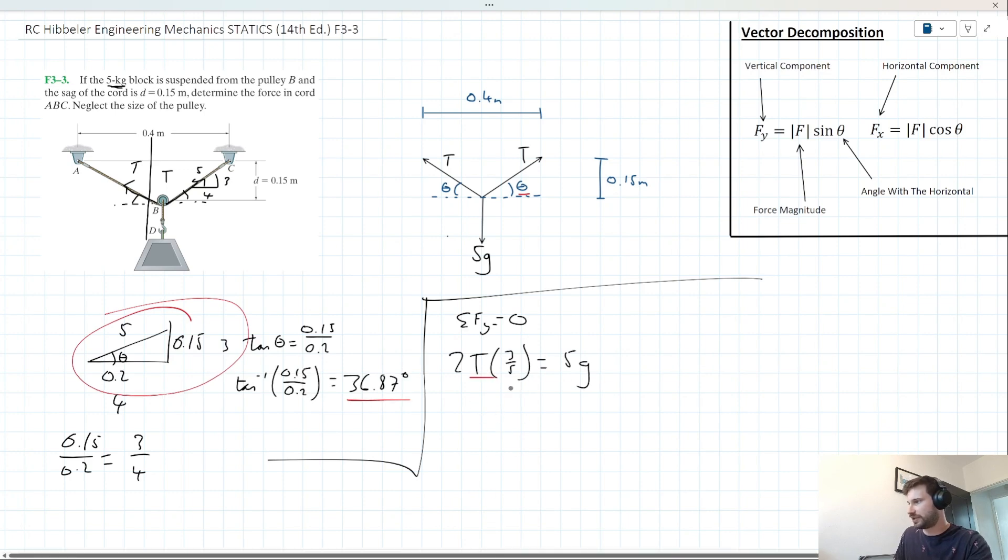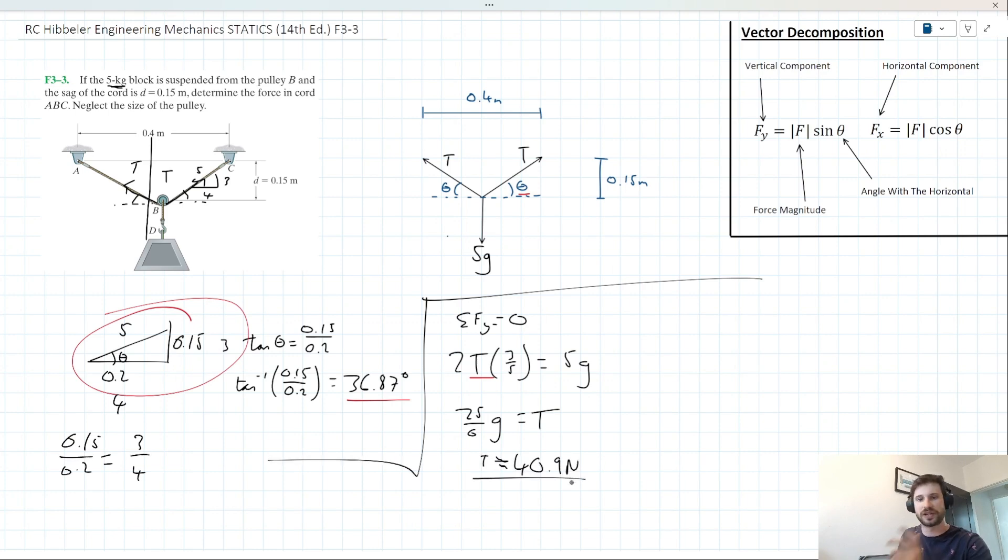We can rearrange for T by multiplying by 5 thirds and dividing by 2. That gives us 25 sixths of G equals T. When we plug that into our calculator, we get a rough value of 40.9 Newtons. That's our solution.